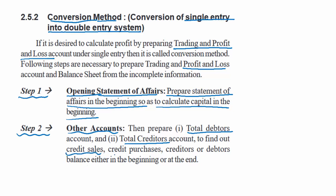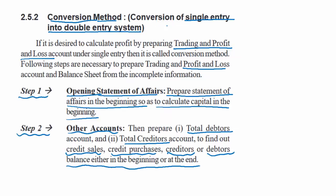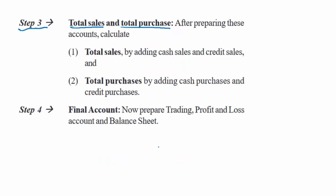Then we prepare other accounts like the debtors account and creditors account, so we can find out the total credit sales, credit purchases, who the creditors are, and what the debtors balance is. We get to know the opening balances, closing balances, etc. Once we open these accounts, we can find out total sales and total purchases — by opening debtor and creditor accounts we learn credit sales and credit purchases. Then by adding cash sales with credit sales we get total sales, and adding cash purchases with credit purchases we get total purchases.